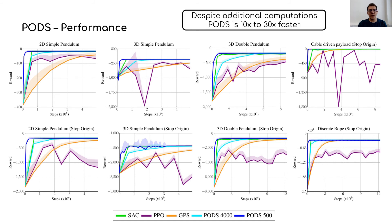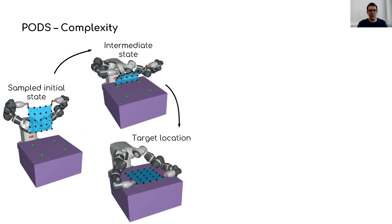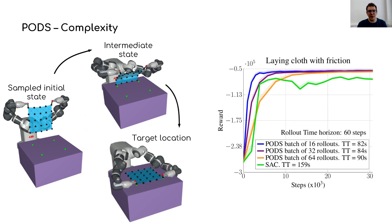Moreover, despite the additional operations required to compute the second-order update rule, PODS is overall 10 to 30 times faster than other approaches. PODS can also be used for more complex and higher-dimensional tasks. As an example, we introduce the problem of placing a piece of cloth on a table, which involves frictional contacts, where PODS is still able to learn high-quality policies, as shown on the right.